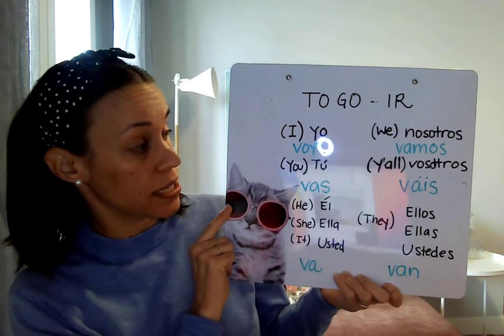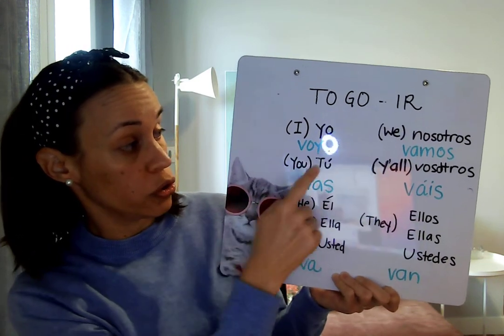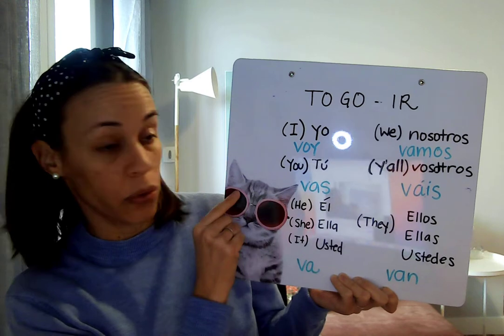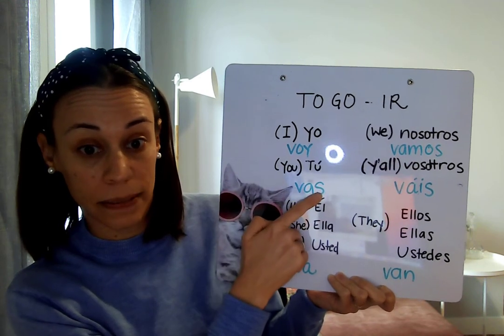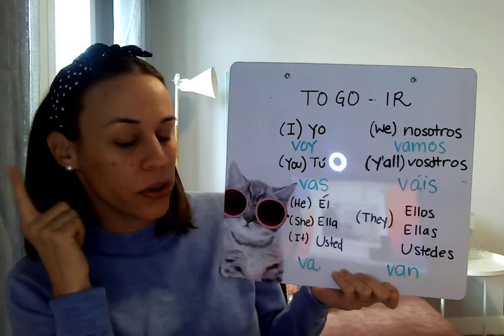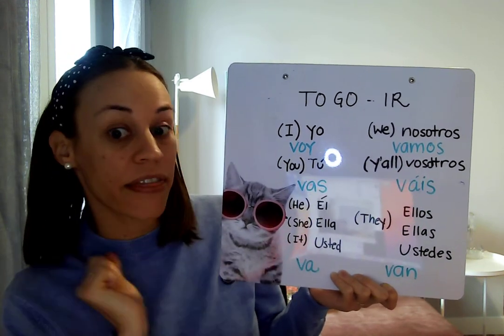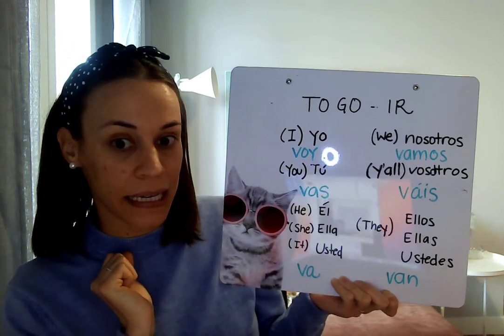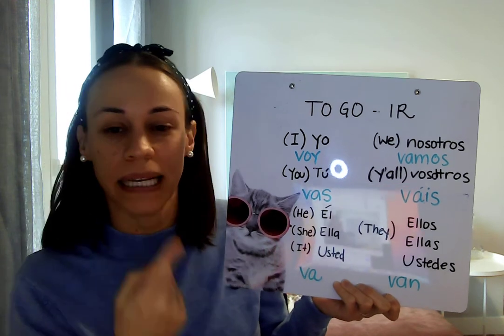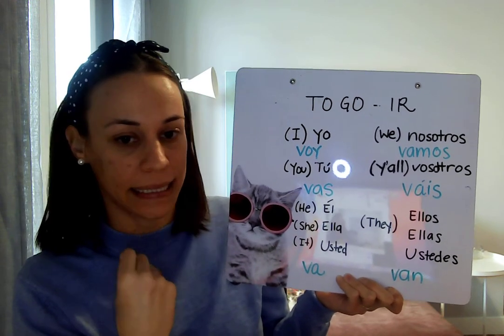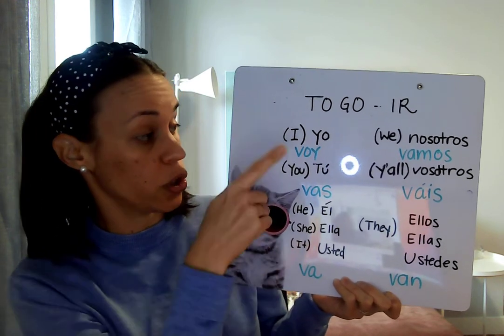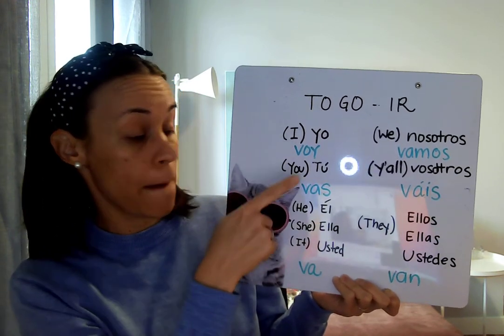If we want to say 'you,' tú, we say tú vas. You hear that the V in Spanish makes a B sound, so tú vas.